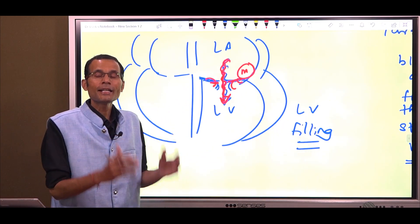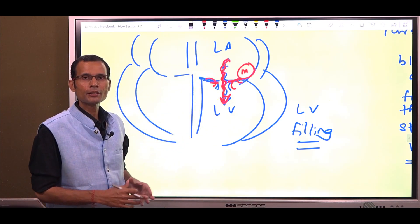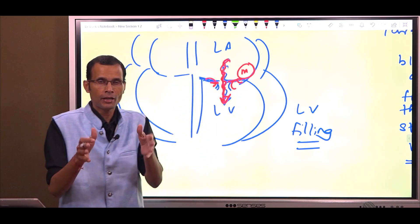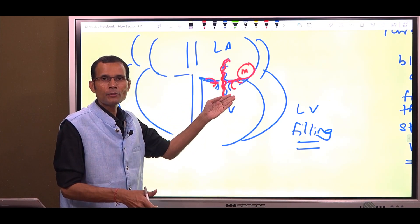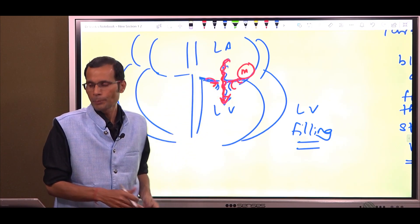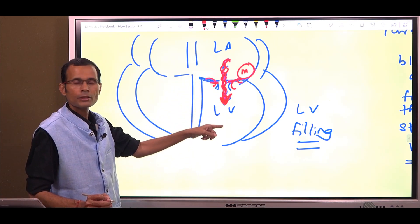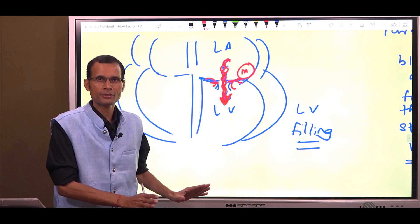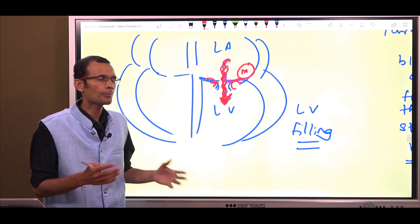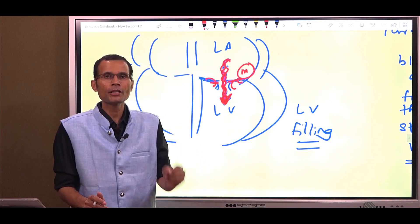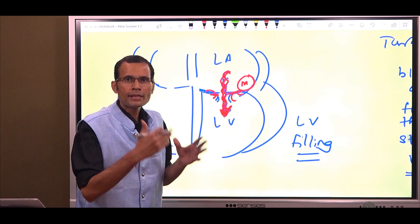Let's come to mitral stenosis now. The mitral valve is situated between the left atrium and left ventricle. What is the chamber behind a valve? In the case of the mitral valve, the chamber behind it is the left atrium, because the left atrium is going to send blood through the mitral valve into the left ventricle whenever the valve opens. So the chamber ahead of it is the left ventricle, the chamber behind it is the left atrium, and therefore left atrial pressure is going to increase in mitral stenosis.